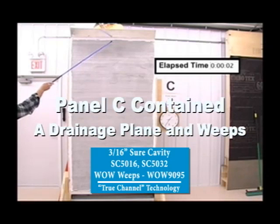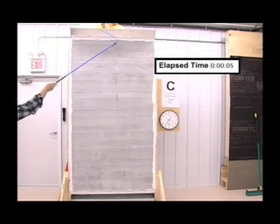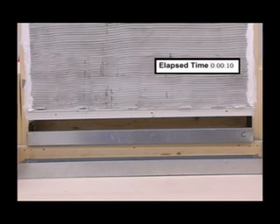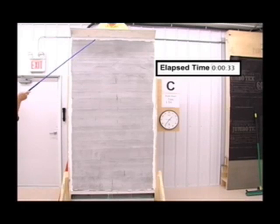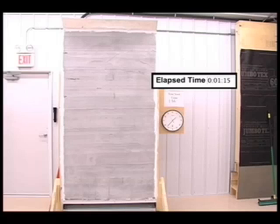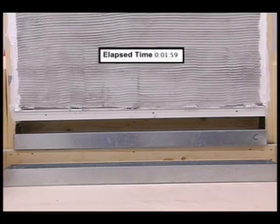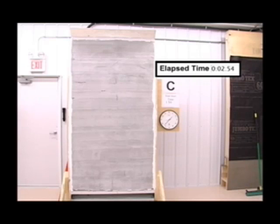At 1:36 p.m., two gallons of water were poured into test panel C's restricted water introduction trough. Water started to drain out of the bottom of the test panel in less than 10 seconds. The test panel showed little or no sign of water spread. At 1 minute 15 seconds of elapsed time, the water introduction trough was empty. At 2 minutes of elapsed time, water had stopped dripping. Test panel C showed a slight water pattern in a line immediately below the water access point, with little or no water spread pattern.